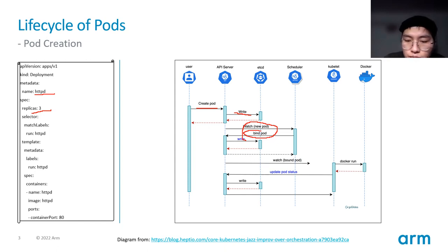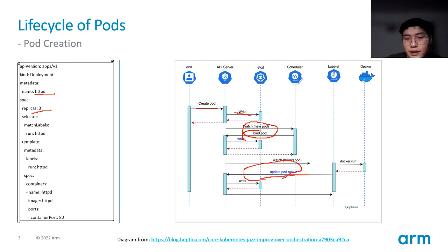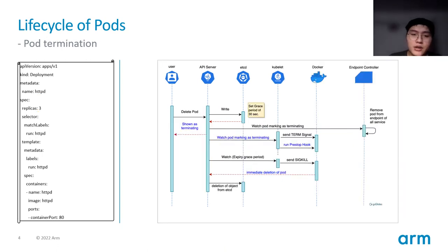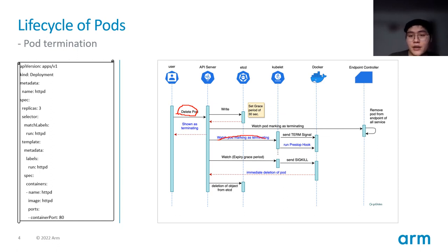The kubelet notices that the new pod is bound to the node. The kubelet will call Docker or other container runtime to create containers. At last, the kubelet will update the pod status to the API server and the API server writes it to etcd. For pod termination, the process is opposite to creation. The user sends the delete pod request to the API server, and the kubelet notices the delete, performs it via the container runtime, and informs the API server at last.